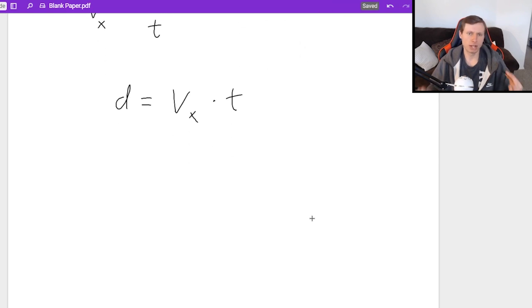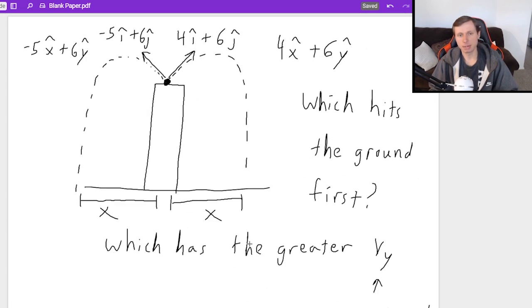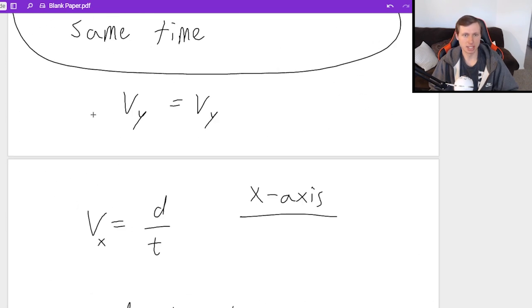Now, normally, we would need more information to solve this distance to see which one's farther. But since we said they'll hit the ground at the same time, that means whichever one travels the further distance just has the greater velocity in the x direction. And if I look back to my original question, it looks like the 5i, even though it's negative, it's still greater in terms of magnitude.